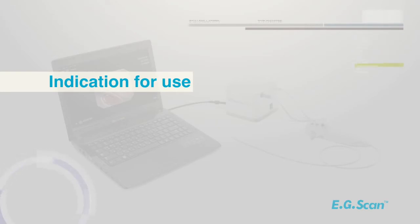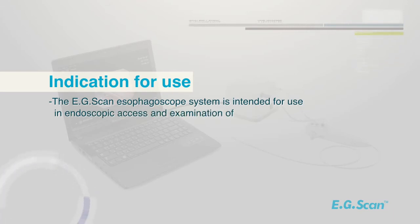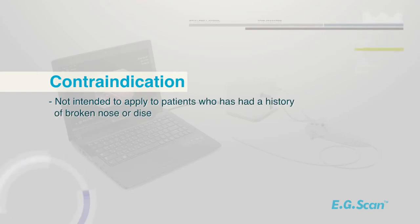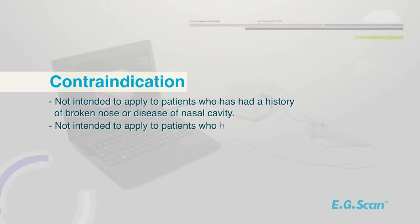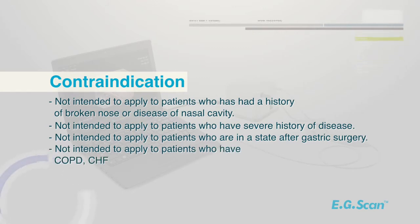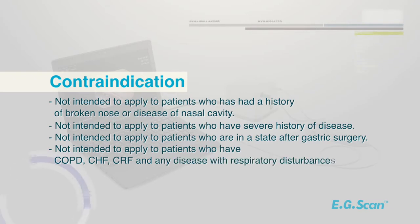Indication for use: The EG Scan esophagoscope system is intended for use in endoscopic access and examination of the larynx and esophagus. Contraindications: Not intended for patients with a history of broken nose or disease of the nasal cavity, severe history of disease, post-gastric surgery, or those with COPD, CHF, CRF, or any disease with respiratory disturbances.